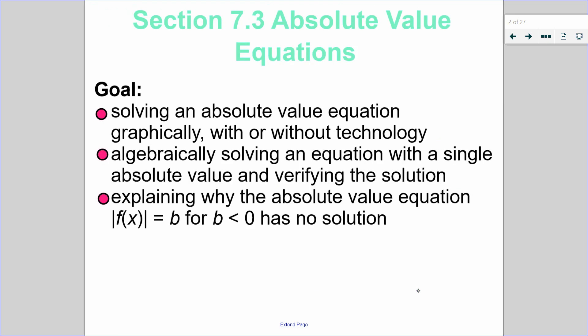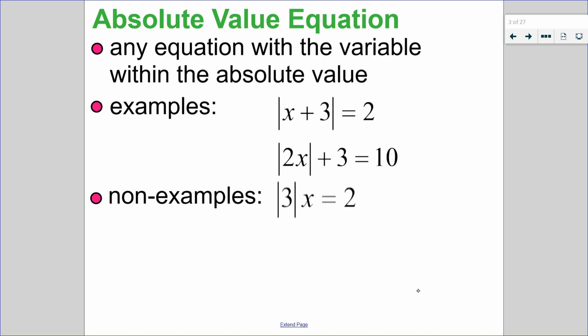In this section, we're going to look at how to solve an absolute value equation. In part 1 we look at this graphically, and in part 2 we will look at it algebraically. An absolute value equation is any equation — meaning it has an equal sign — in which the variable is within the absolute value. A non-example would be where there is no variable inside the absolute value. So the variable has to be inside the absolute value.